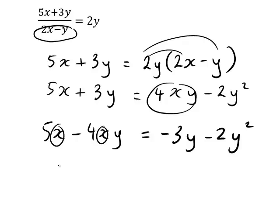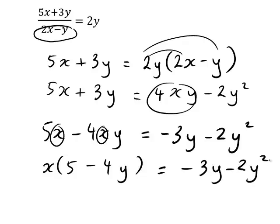The next step is to take x out as a common factor here. So we have x times 5 minus 4y on the left, and on the right we still have negative 3y minus 2y squared in this example.